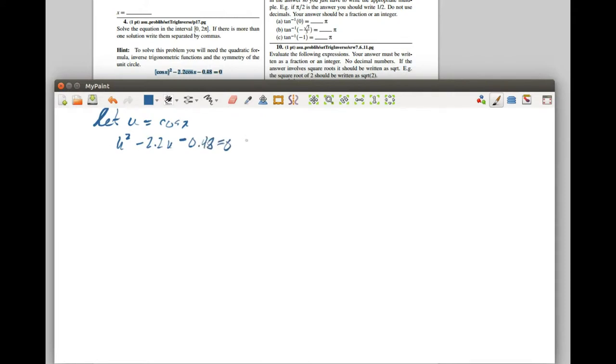So that's a quadratic equation and we should be able to solve that quadratic equation. You should have the quadratic equation memorized by now. It says that if au squared plus bu plus c is equal to 0...